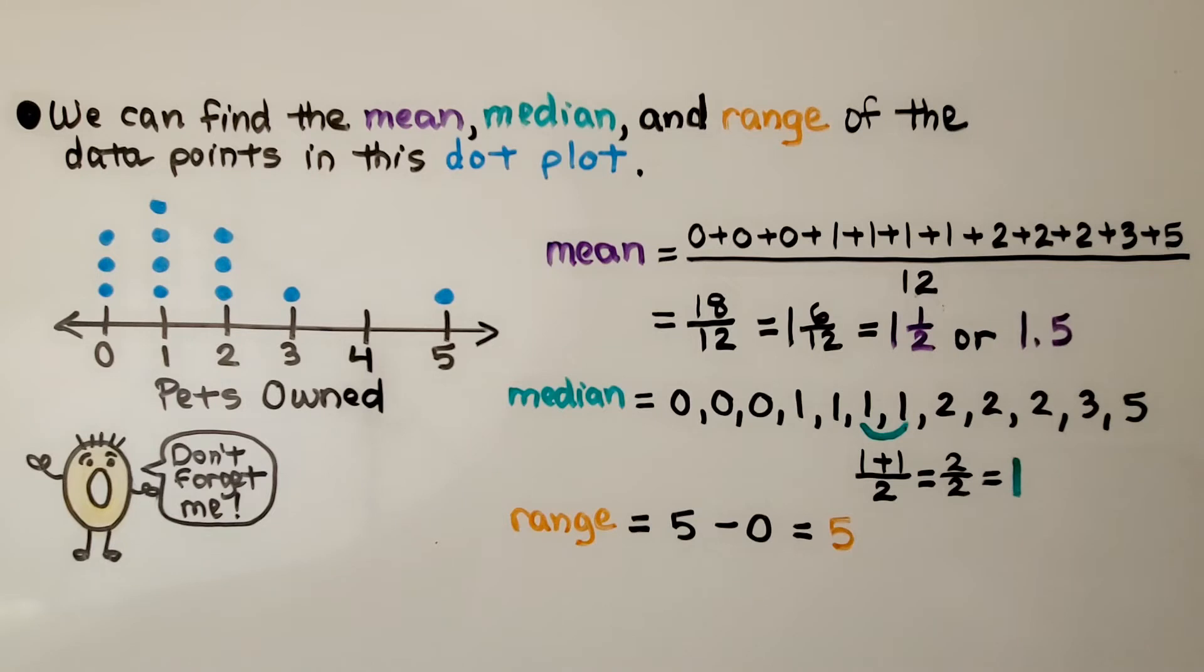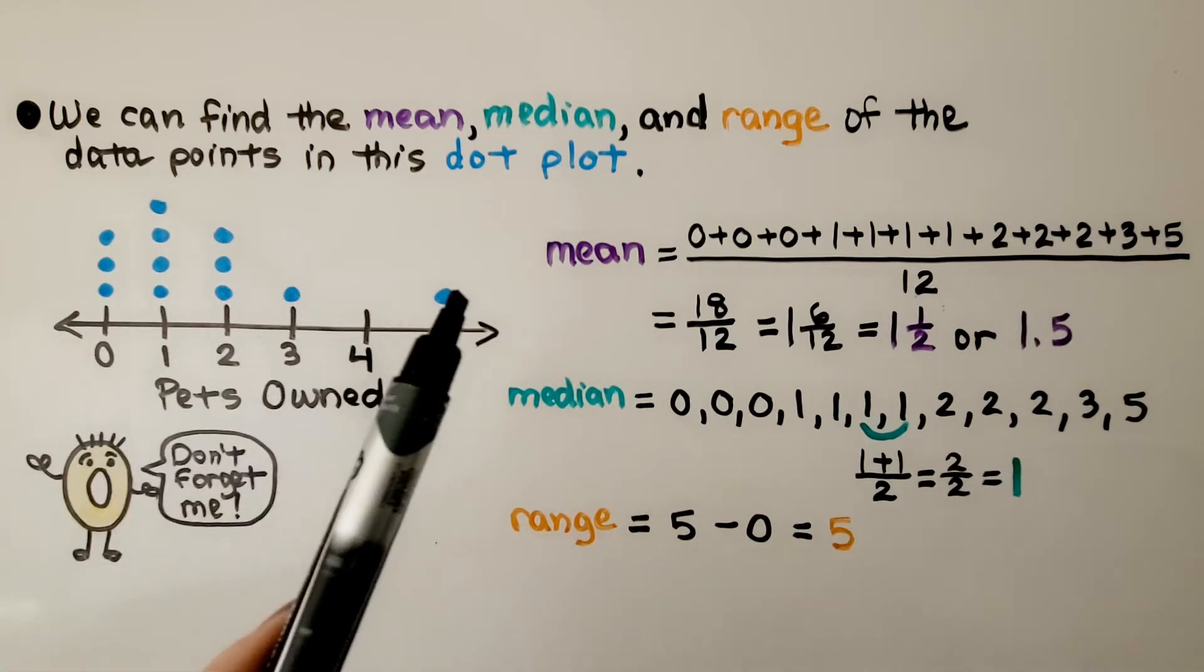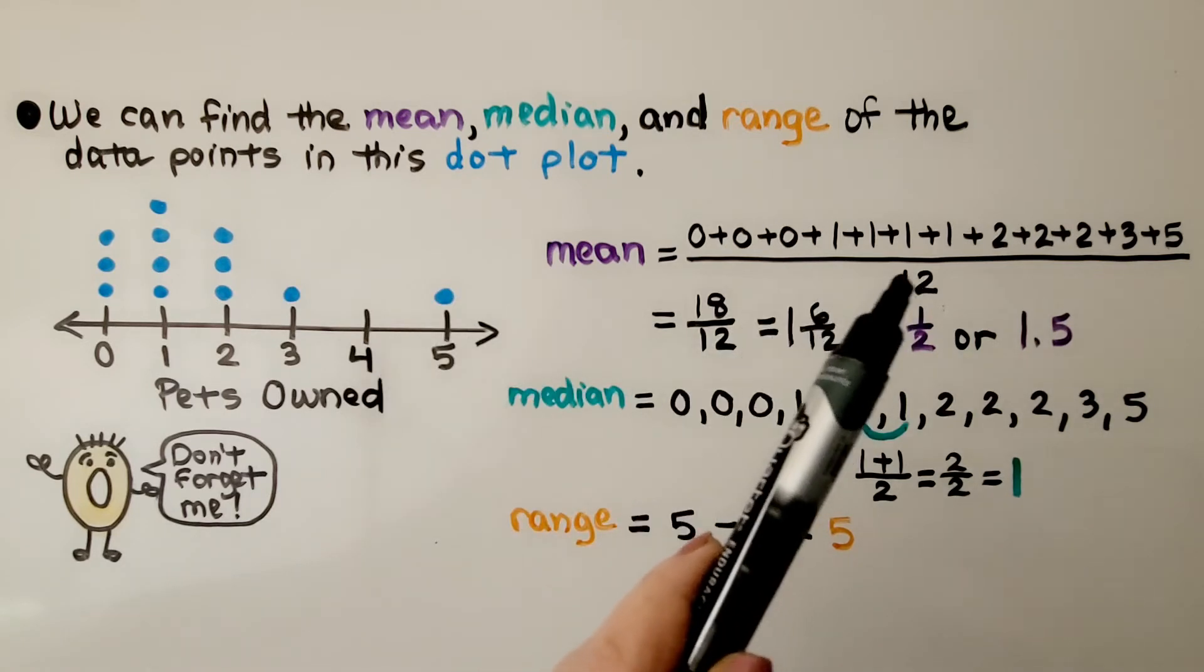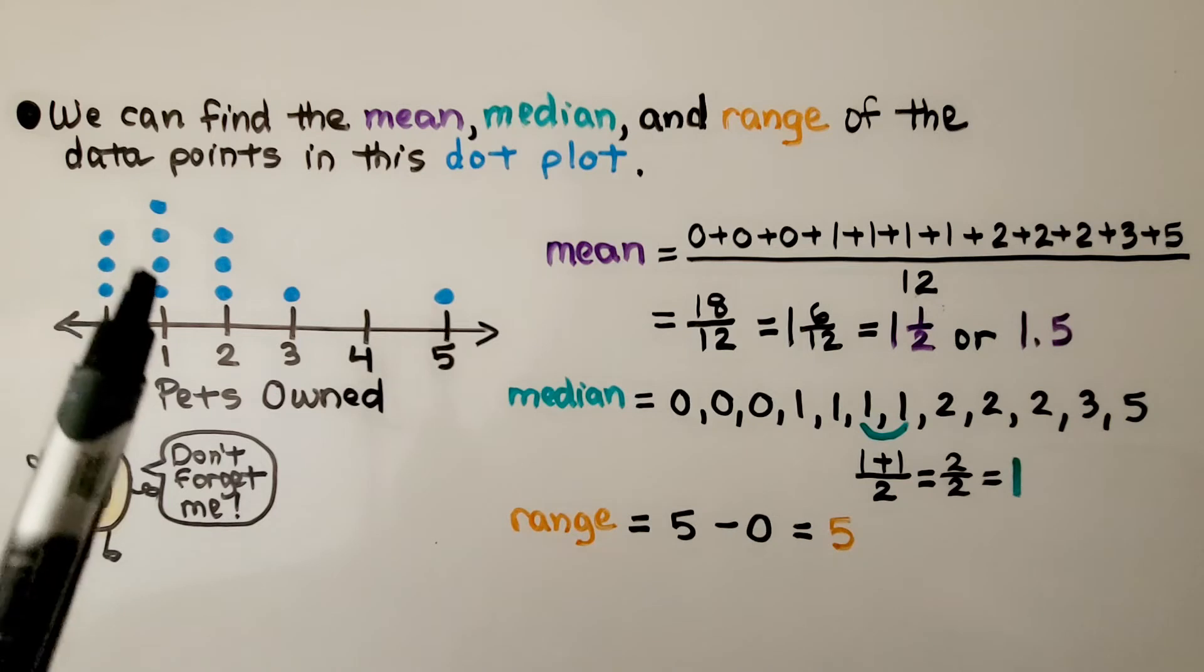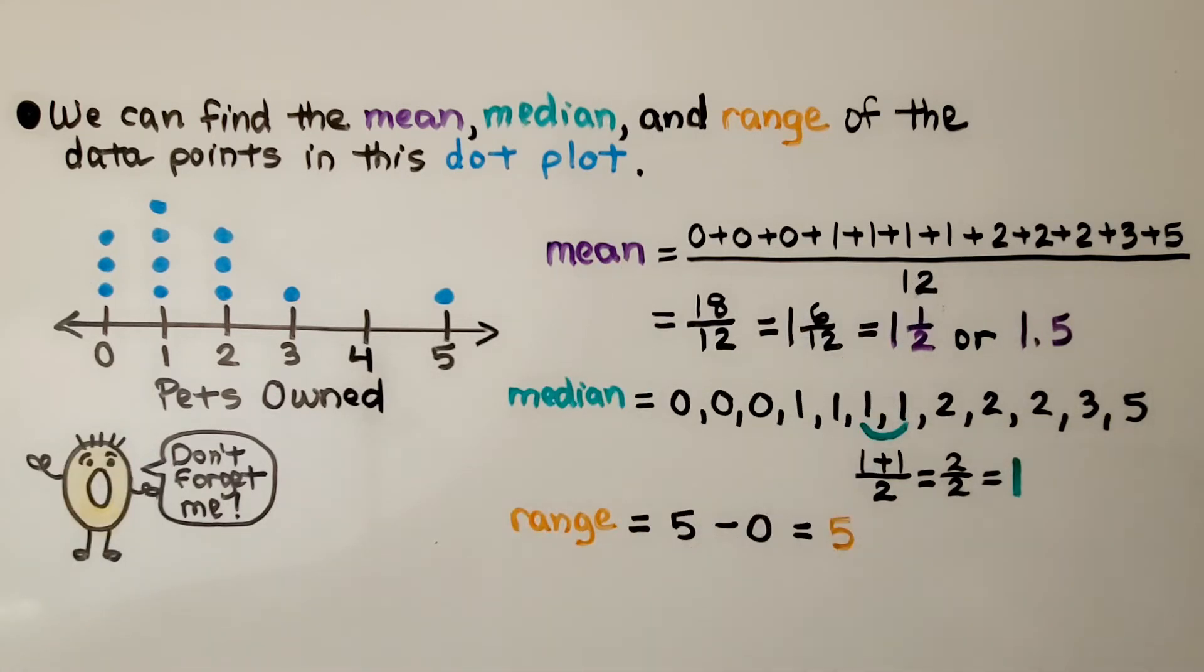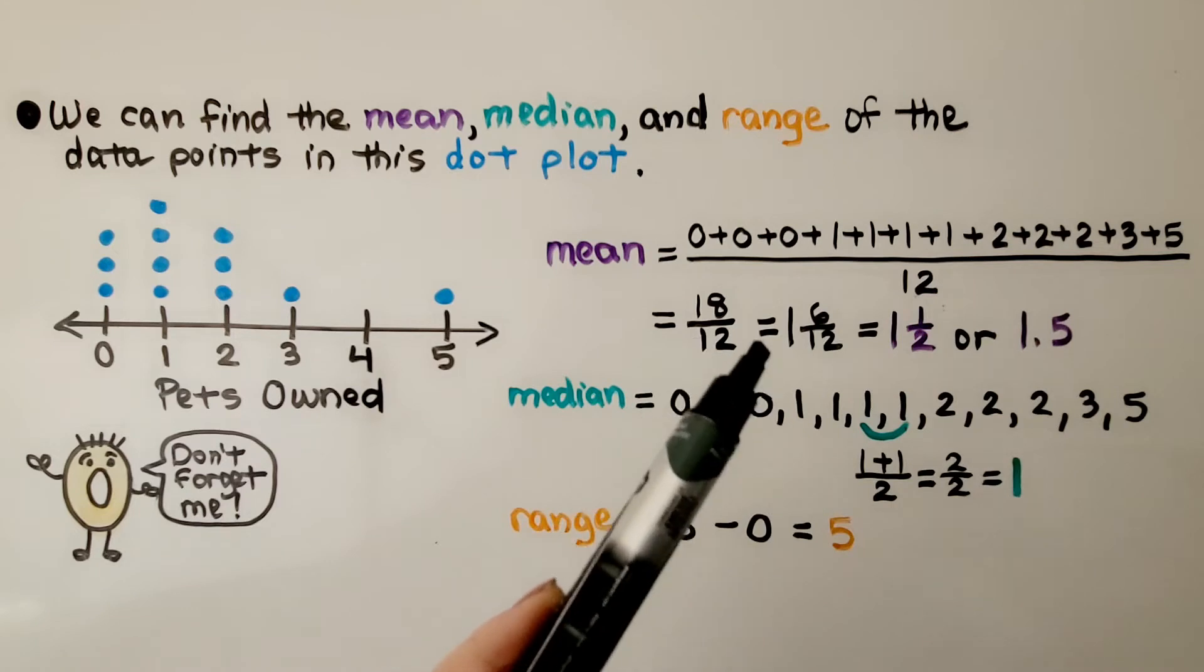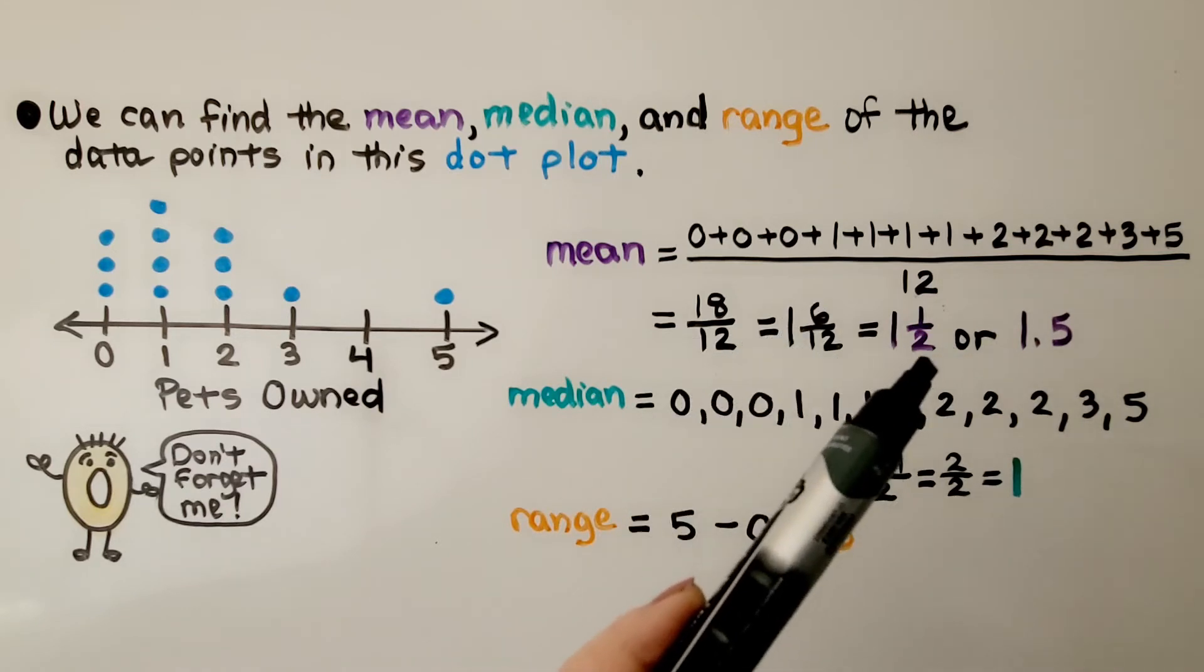We can find the mean, median, and range of the data points in this dot plot showing pets owned by students. Don't forget the 0. To find the mean, we've got 3 zeros here, so that's 0, 0, 0, 1, 1, 1, 1, 2, 2, 2, 3, and 5. That's 12 data points, so we need to divide by 12. If we didn't include those zeros, we'd be dividing by 9 and get the wrong mean. We add them all up and get 18. There's 12 values, so we divide by 12. That's 1 and 6 twelfths, or 1.5.